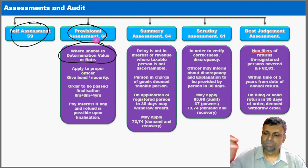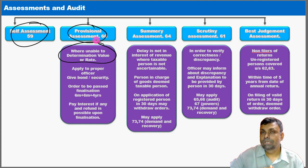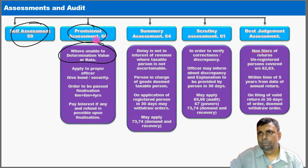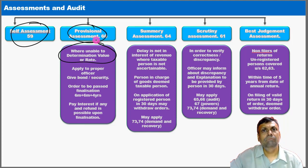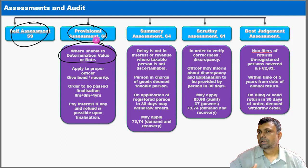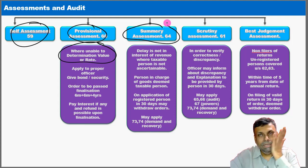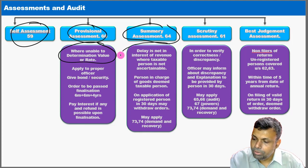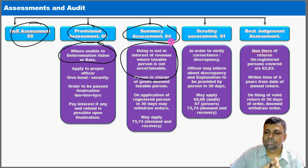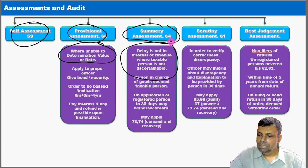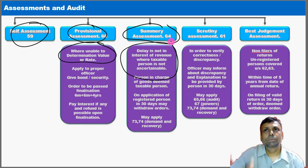In provisional assessment, the taxpayer makes an application to the officer requesting provisional assessment, makes a provisional payment, and after finalization makes the balance payment or claims a refund. The provisional assessment becomes a final assessment in due course. The summary assessment is done in a situation where delay of that assessment would affect the interest of the revenue — where delay may cause loss of revenue and a quick assessment is needed.